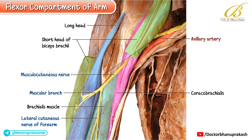Other key structures visible within the axilla include the axillary vein and axillary artery. The median nerve is also seen positioned between these vessels before coursing medially along the arm.